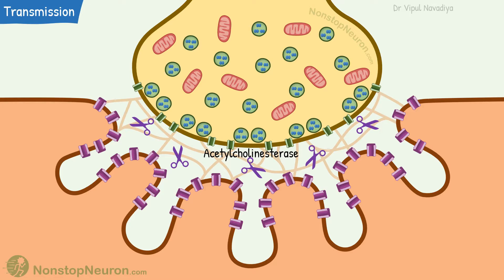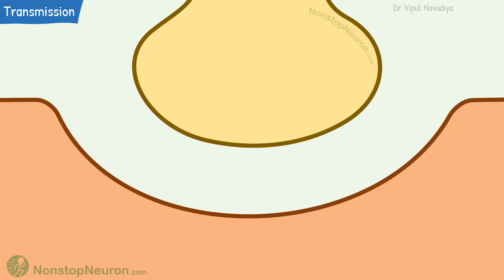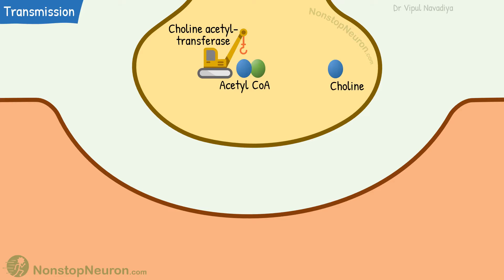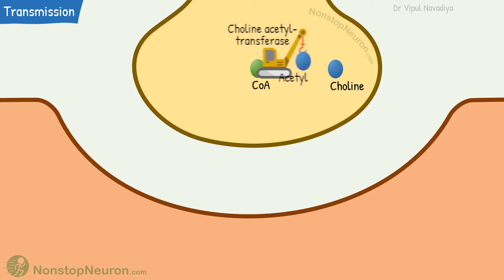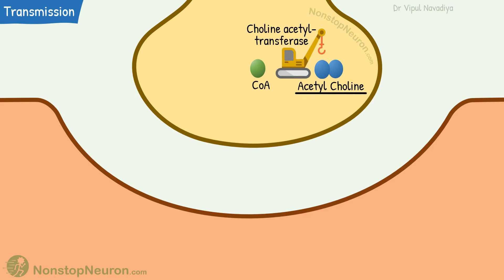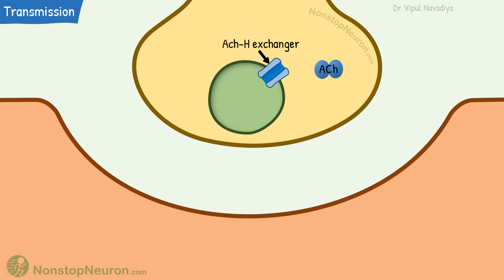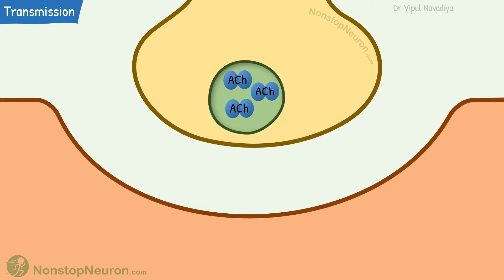Now we will see the physiology of neuromuscular transmission. We will simplify this diagram so that we can focus on physiology. First, let's see the synthesis of acetylcholine. The raw materials required for its synthesis are acetyl coenzyme A and choline. The enzyme choline acetyltransferase catalyzes the transfer of the acetyl group from coenzyme A to choline, resulting in the formation of acetylcholine. This reaction occurs in the cytoplasm. Then via the acetylcholine-hydrogen exchanger, acetylcholine moves into the synaptic vesicle, where it is stored until needed.